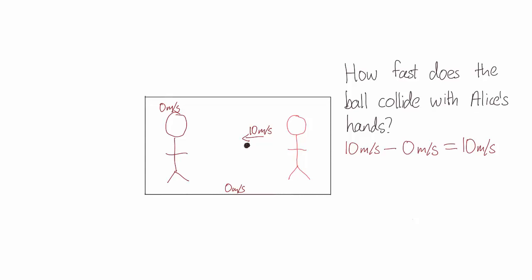Now let's talk about things from Bob's point of view, who is standing on the platform watching the train go by. Bob sees the train going by really fast. It's a bullet train traveling at 90 meters per second.